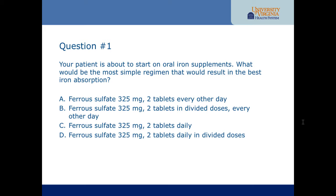This leads to our first question: your patient is about to start oral iron supplements — what would be the most simple regimen resulting in the best iron absorption? Would you give ferrous sulfate two tablets every other day as one dose, two tablets in divided doses every other day, two tablets as one dose daily, or two tablets daily in divided doses? Based on the studies reviewed, the answer is two tablets as one dose every other day.